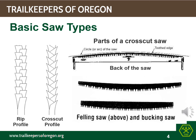For crosscut saws, there are two basic types: a felling saw, which has a curved back, and a bucking saw, which has a straight back. A felling saw is lighter in weight and narrower at the midsection, which allows for the insertion of wedges sooner than for a bucking saw. The bucking saw is stronger but weighs more. Weight can be a big factor if you are carrying the saw for any distance.